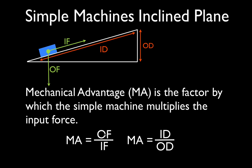In order to calculate the MA, we have to know either both forces or both distances for the simple machine, in this case the inclined plane. And if you know all four of them, you can check. You should get the same, or you must get the same mechanical advantage in both cases.